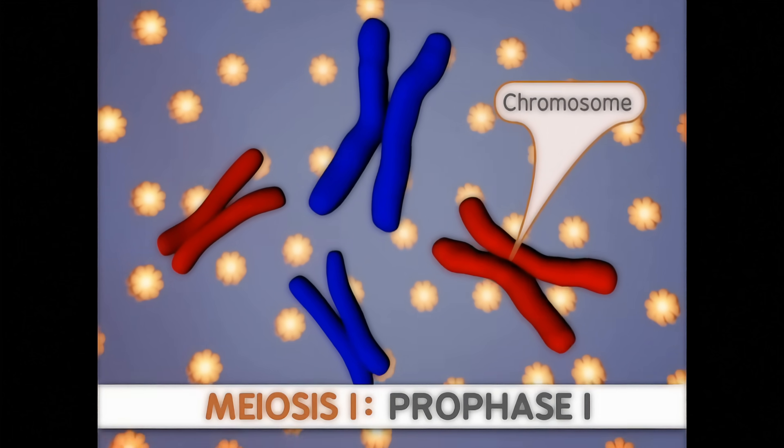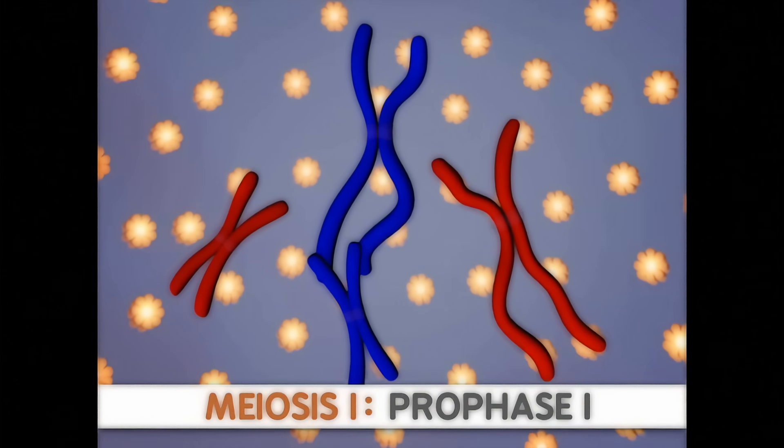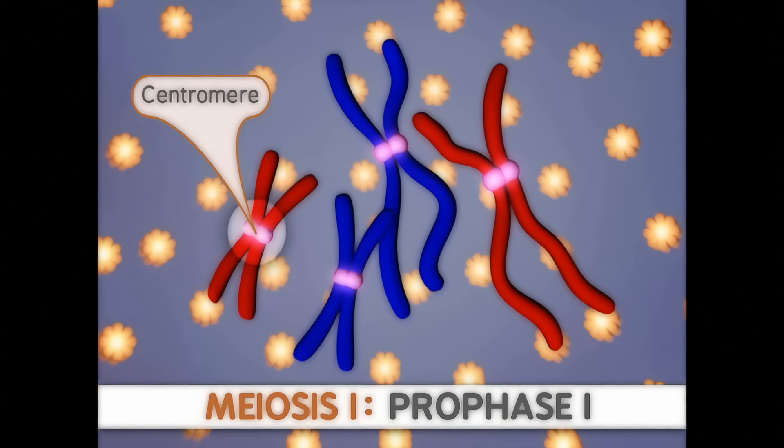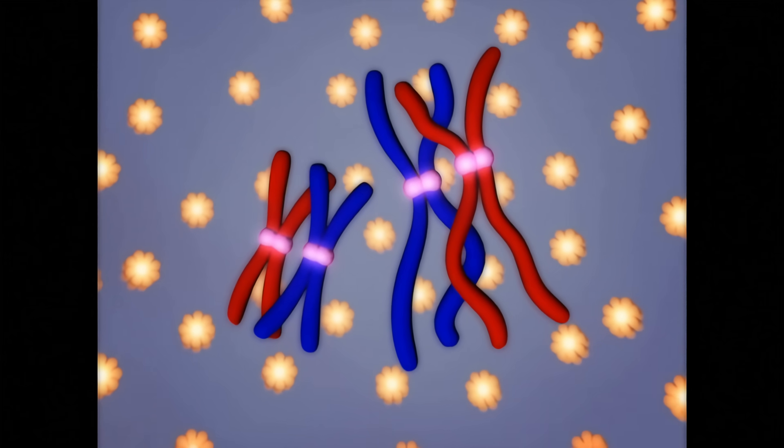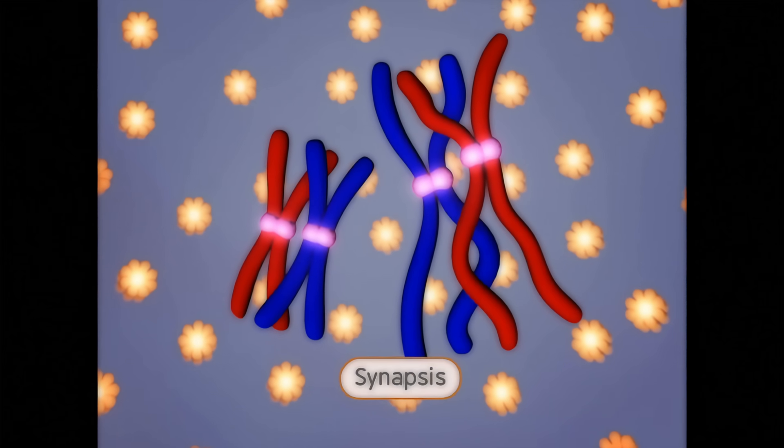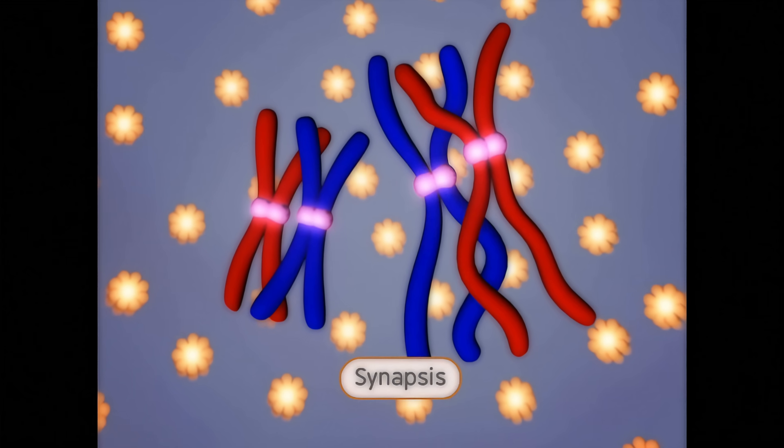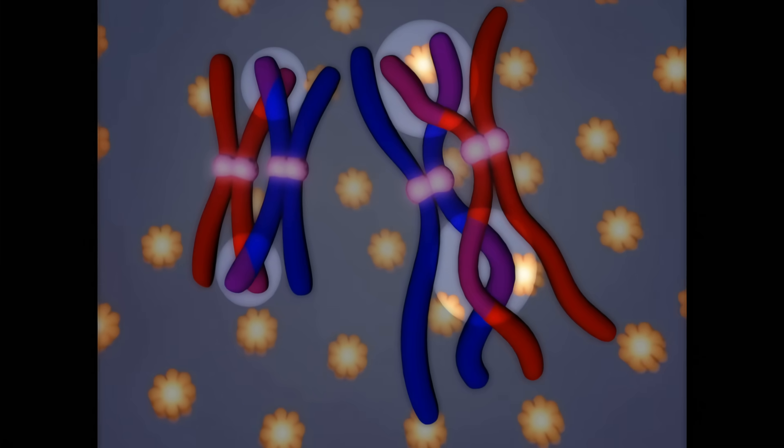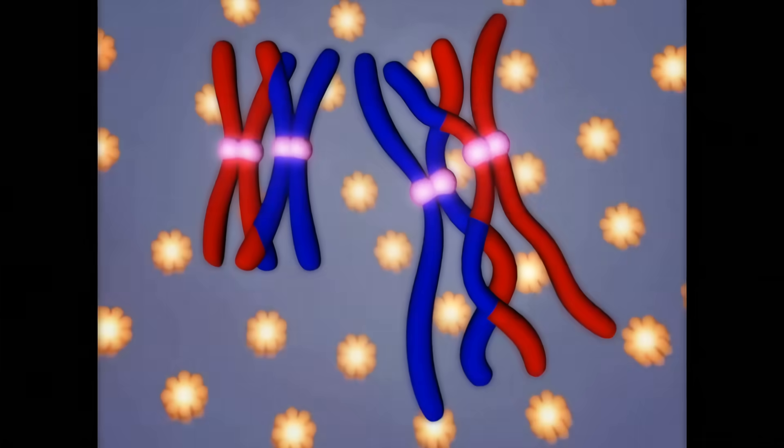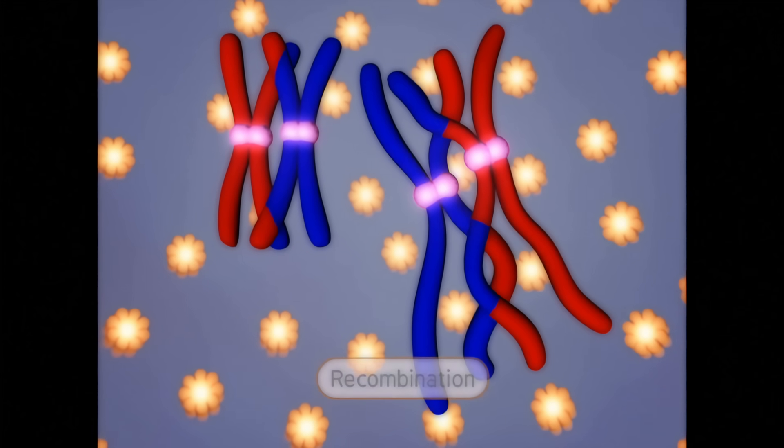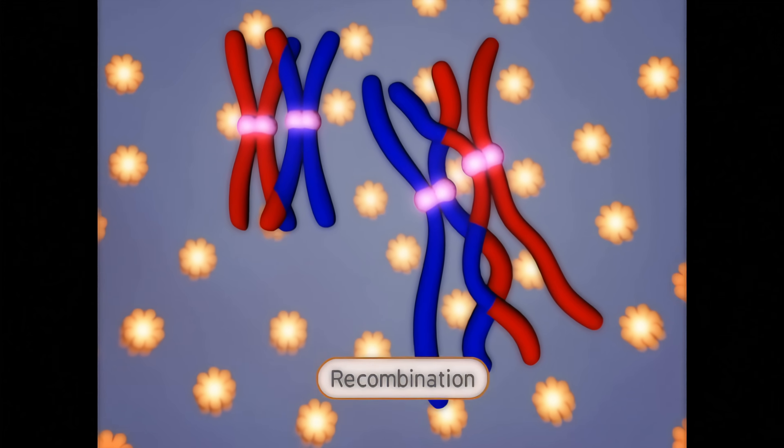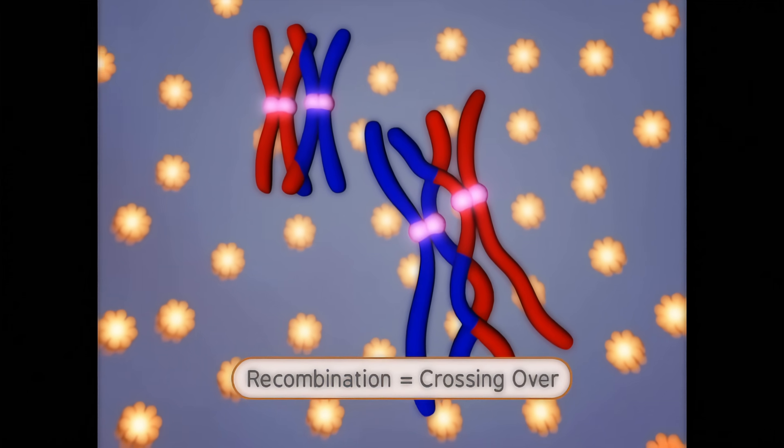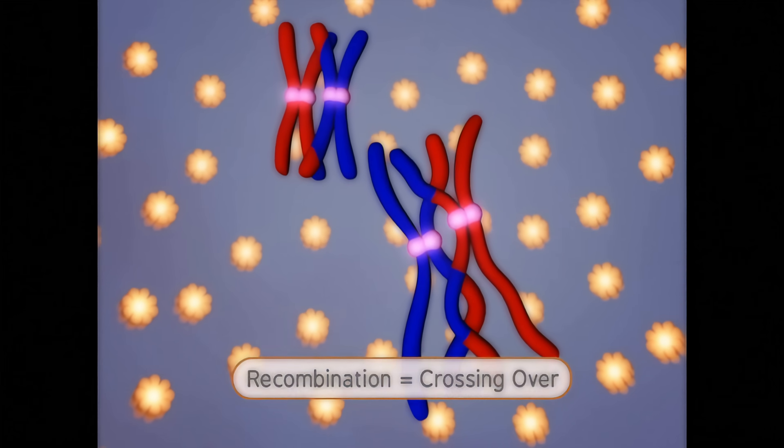Here we see the duplicated sister chromatids join together at the centromere. They stay fused at the centromere throughout meiosis I. Next, each pair of homologous chromosomes undergoes synapsis to form a complex involving two pairs of sister chromatids. Chromosomal material is exchanged between the two pairs of sister chromatids. This event is called recombination, or more commonly, crossing over. After crossing over, the sister chromatids for each chromosome are no longer identical to one another.